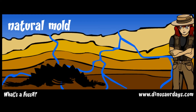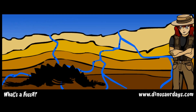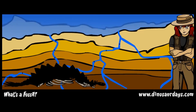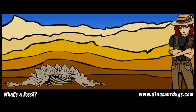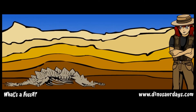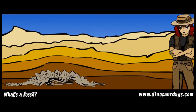Now the groundwater brings tiny pieces of rock into those empty spaces. After millions of years, these tiny rock pieces fill the mold. The rock is pressed further and further underground. Over time, the entire skeleton mold becomes solid rock.